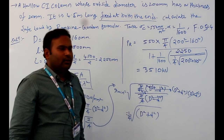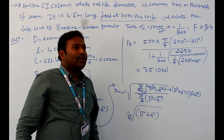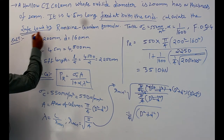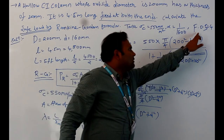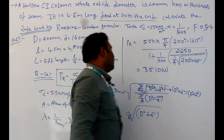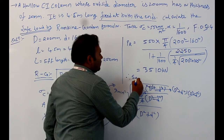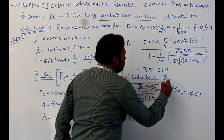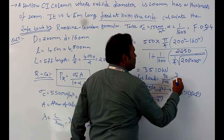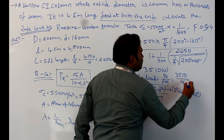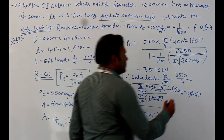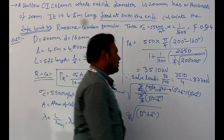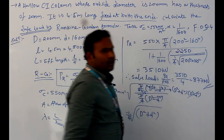P_R equals 3510 kilonewton. But the question asks to calculate the safe load, and they have given a factor of safety as 4. Therefore, safe load equals P_R divided by factor of safety, which is 3510 divided by 4, giving a safe load of 877 kilonewton.